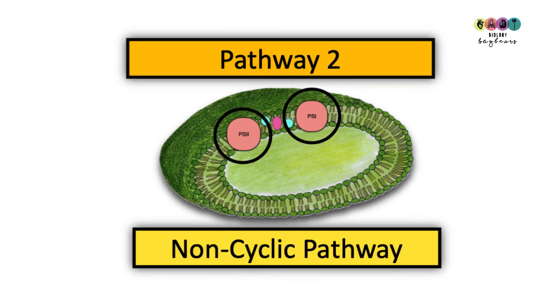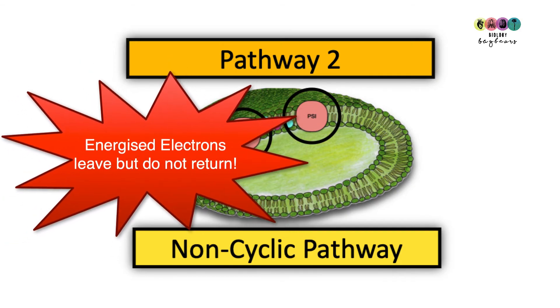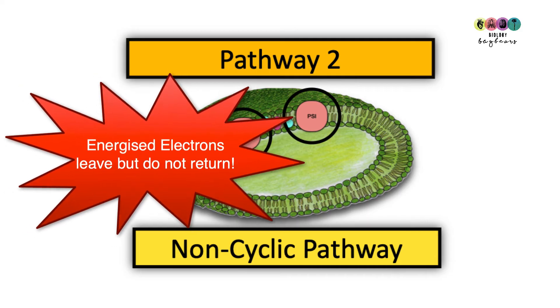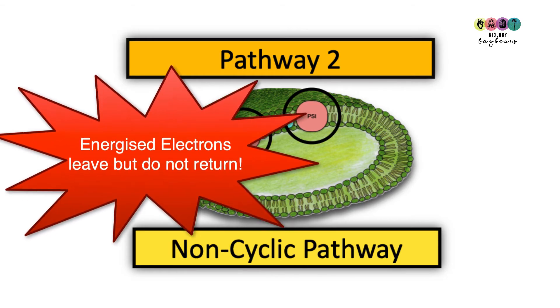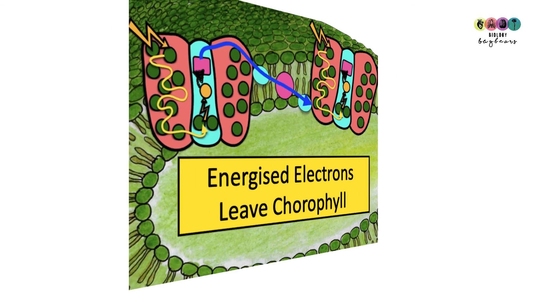Still in the light stage, we're going on to pathway two, the non-cyclic pathway. The reason why it's the non-cyclic pathway is because energized electrons leave chlorophyll but they do not return. That's the big thing, they do not return.